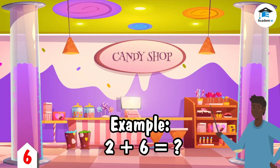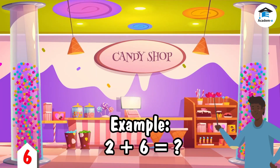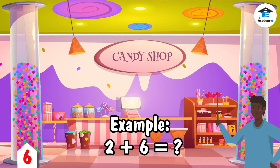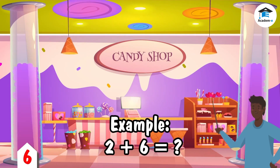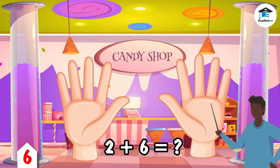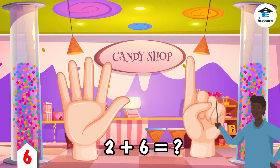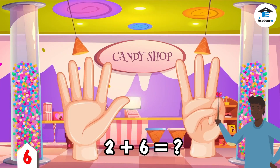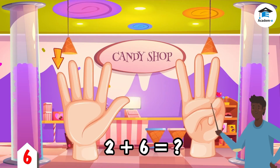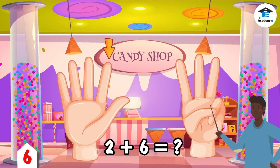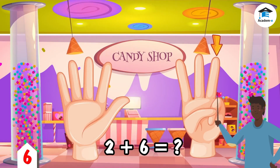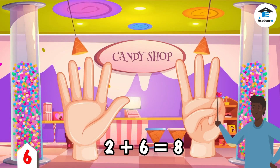Let's have an example: 2 plus 6 is equal to? Let's find the sum of 2 and 6. Show your two hands — ready, show me your six fingers, then add two fingers. Let's count them all: 1, 2, 3, 4, 5, 6, 7, 8. The answer is 8.